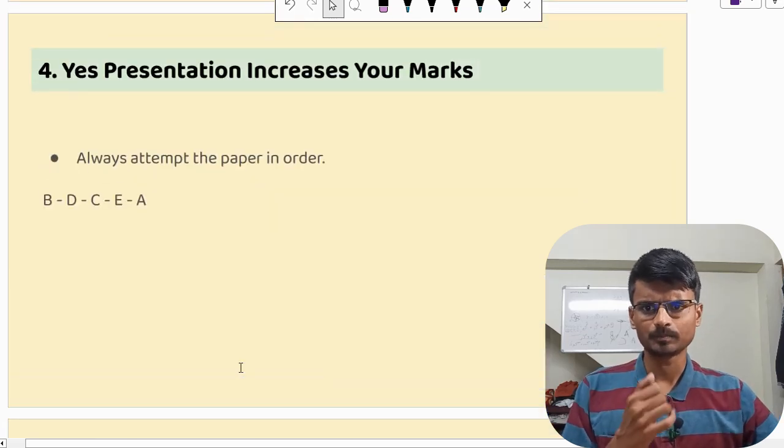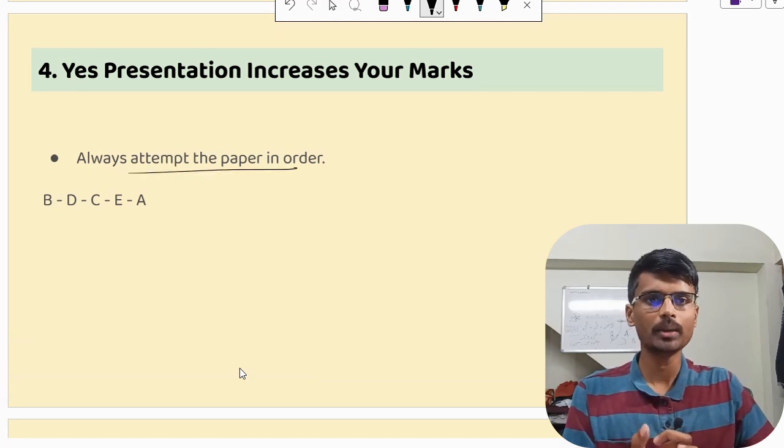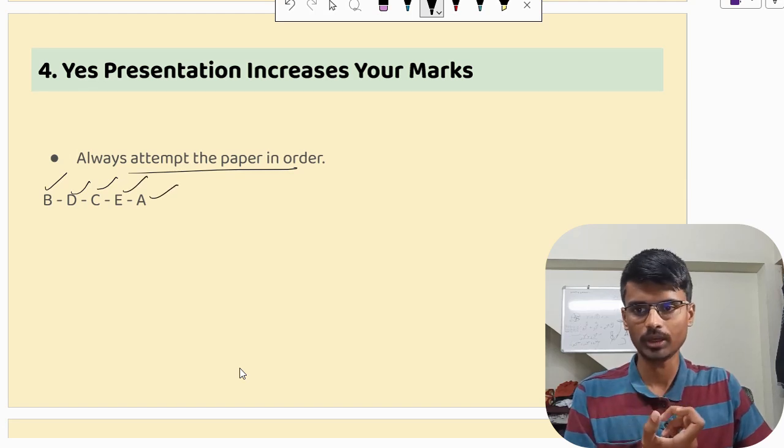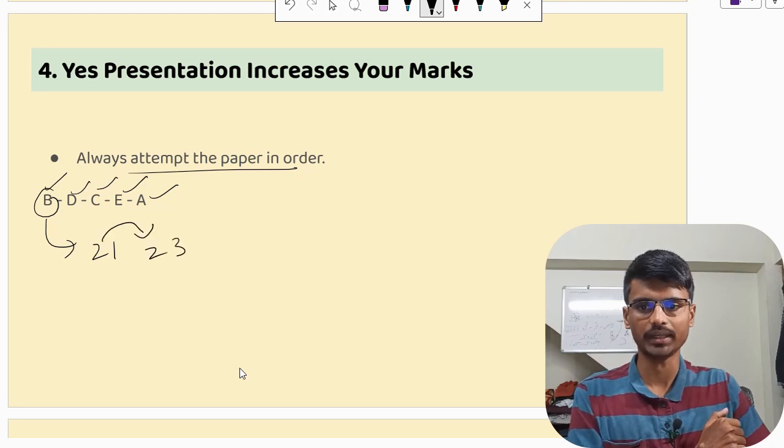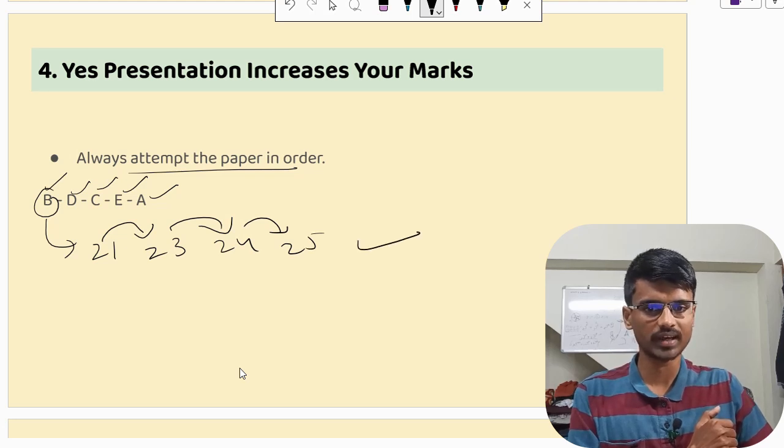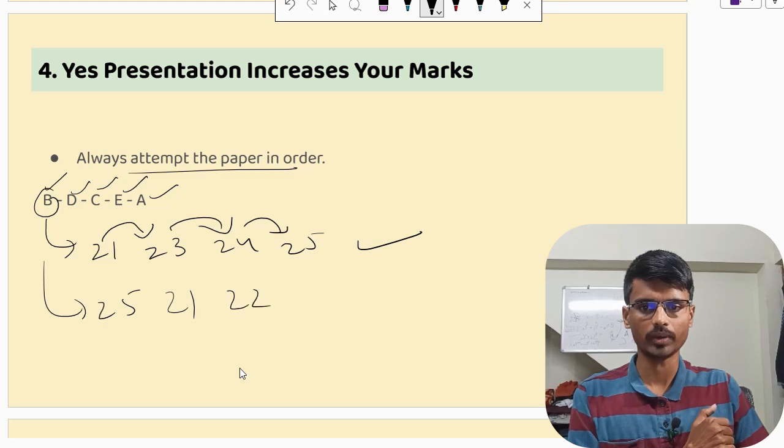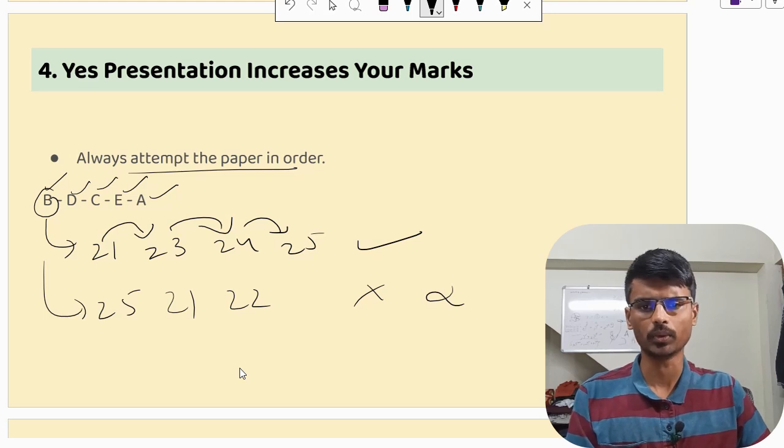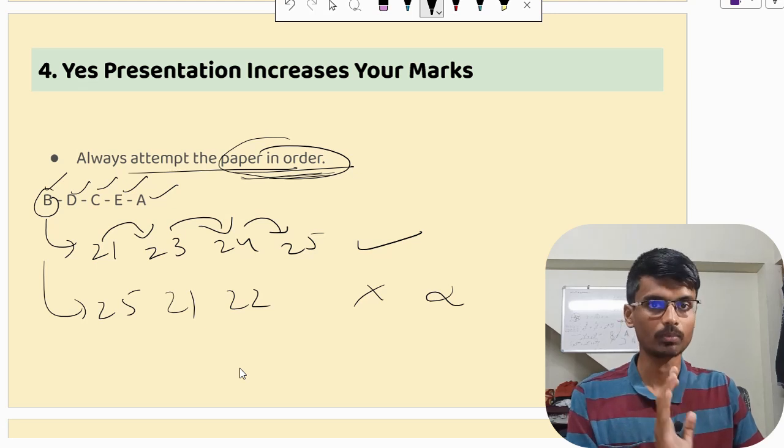Next, one more thing you need to keep in mind is, always attempt the paper in order. What does this mean is, you can pick any of the section. First, you can do section B, then D, section C, then E, then A. No issues. But when you are doing section B, have a proper order. If you are doing 21, then do question number 23, then do question number 24, so and so. This is the correct method, but don't do like this. First, you are doing question number 25, then you are doing 21, 22. Don't do this. This will become hard for the teacher who is going to correct. Always try to attempt the paper in order. This is one more rule that you must follow.